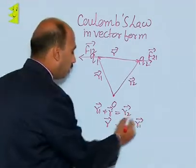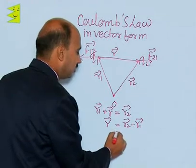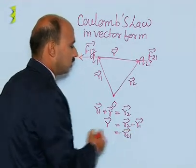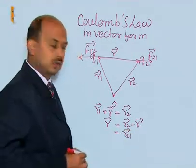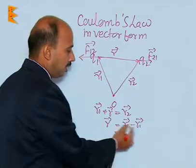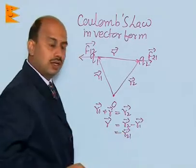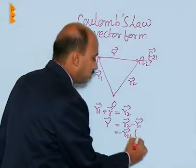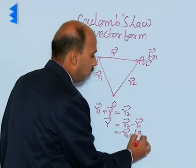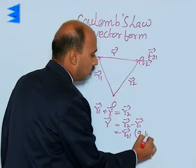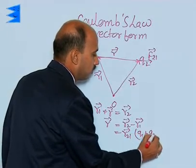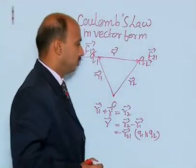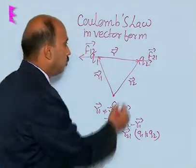We can also write here, this vector R is equal to R21, that is R2 minus R1. We write R21 — it means its direction is actually from Q1 to Q2. R21 means direction is from Q1 to Q2.